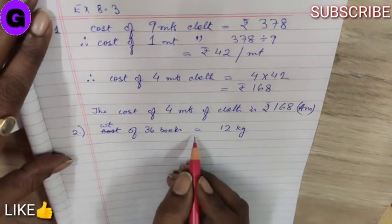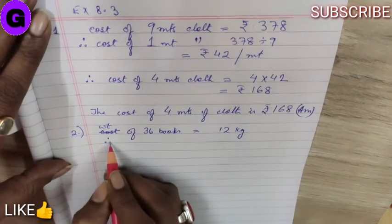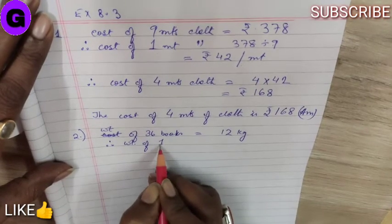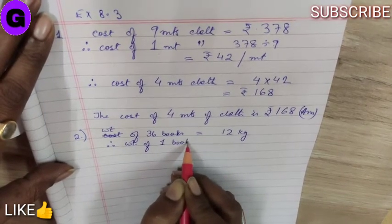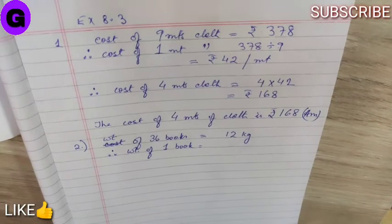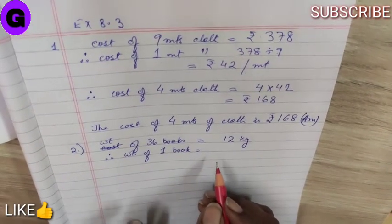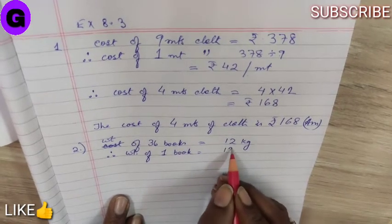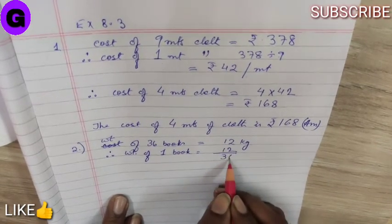Weight of 36 books is equal to 12 kg. Therefore, weight of 1 book, it will be lighter. That means the amount will be less. That means we have to divide.